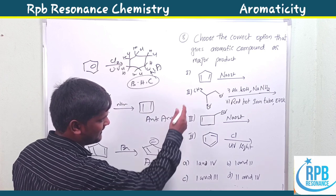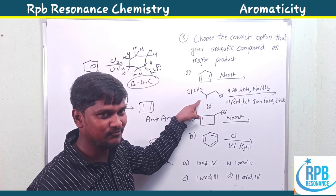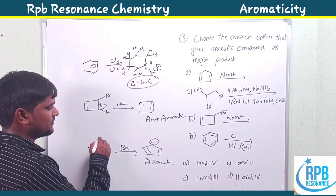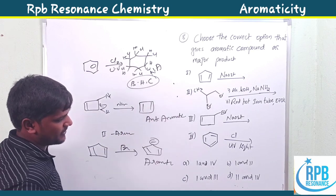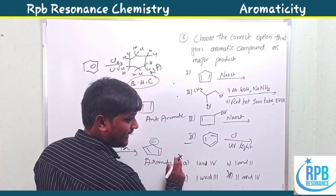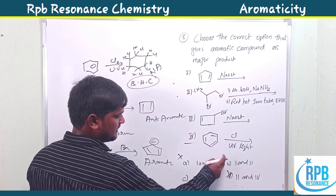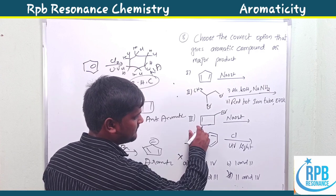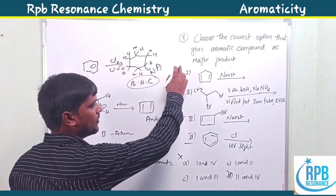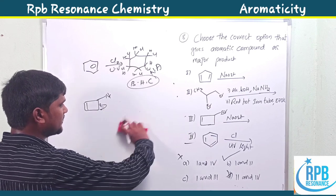Reaction two: with KOH and NH2 it forms a cyclopropene ring with a double bond, which under red-hot tube conditions produces the cyclopropyl cation — aromatic in nature. So reactions one and two give aromatic products. Options A and D include reaction four, which is non-aromatic — they are wrong. Option C includes reaction three, which is anti-aromatic — wrong. Therefore option B (reactions one and two) is correct.